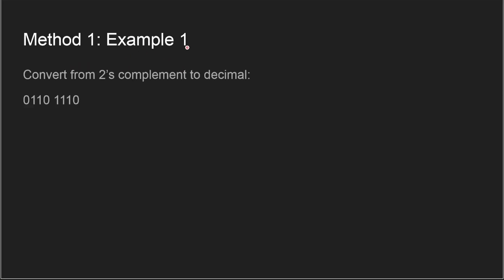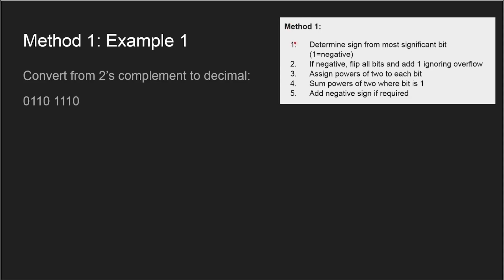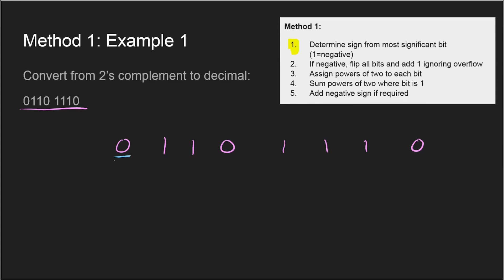Now we can get into the examples, starting with method one. The first example says convert from two's complement to decimal, and gives us the number 0110 1110. I'll write the bits out a little more spaced out to give us more room to work. Step one: determine sign from the most significant bit. Looking at the leftmost bit, it's zero, and since one is negative, zero must be positive — so we are working with a positive number here.